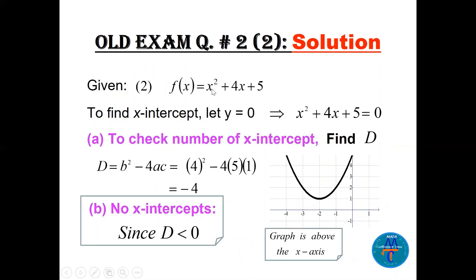The second function is f(x) = x² + 4x + 5. To find x-intercepts, let y = 0 and find the discriminant: b² - 4ac = 16 - 20 = -4, so no x-intercepts. The graph is above the x-axis because a = 1 is positive, so the parabola opens upward. If a were negative, the graph would be below the x-axis.